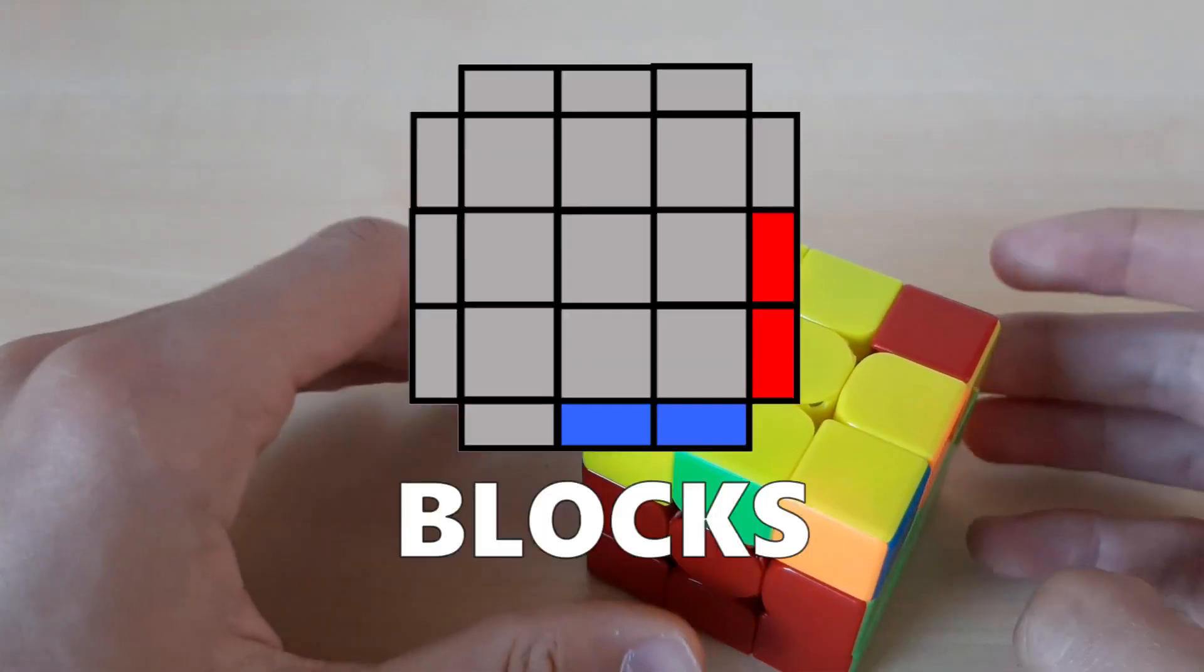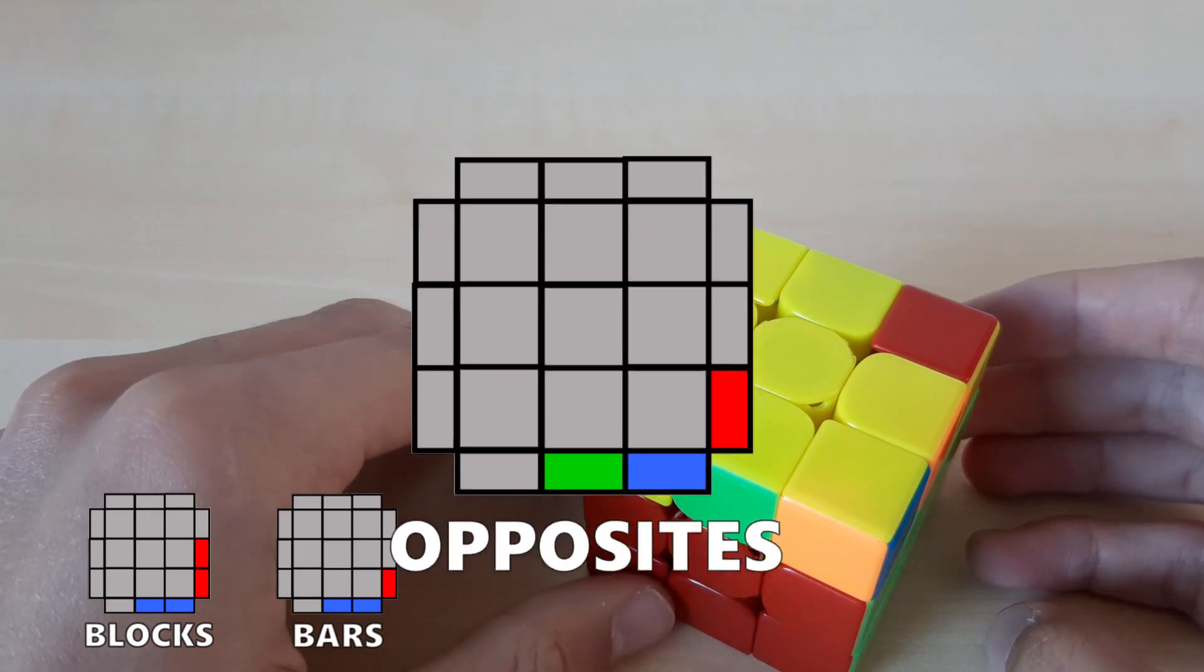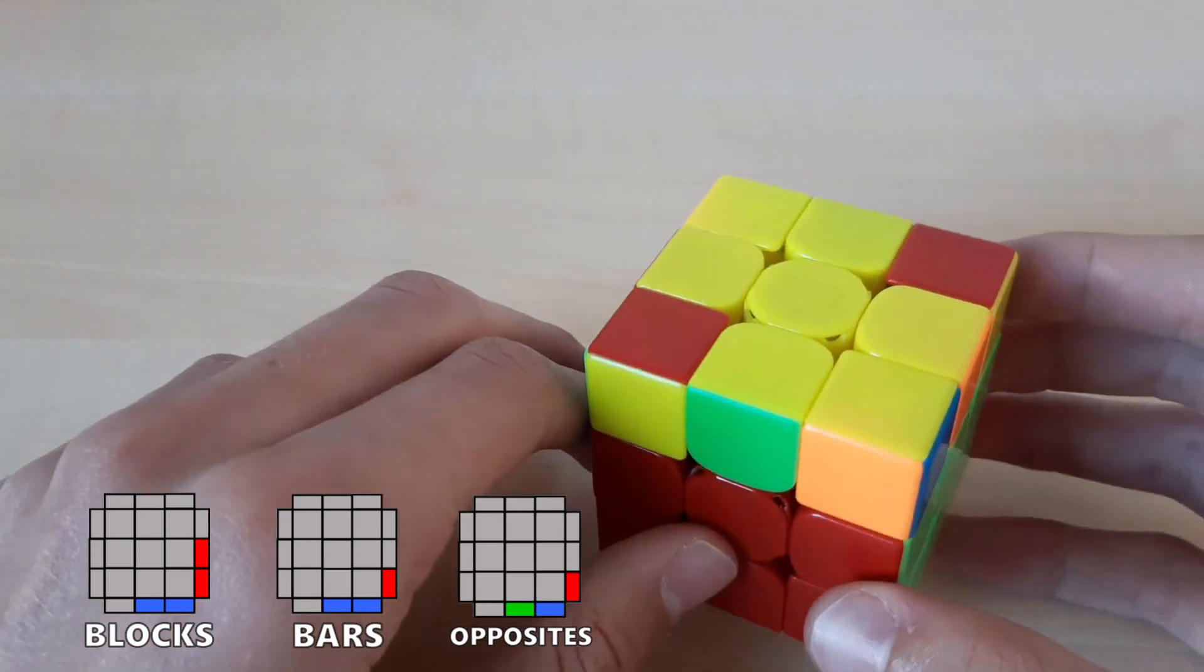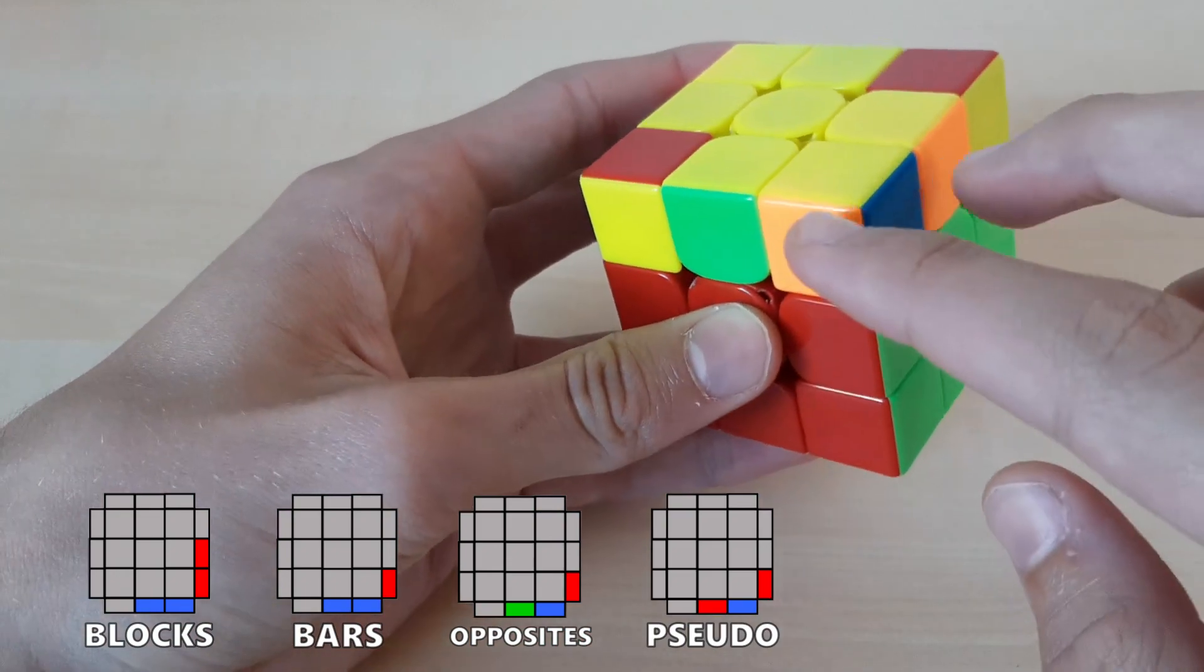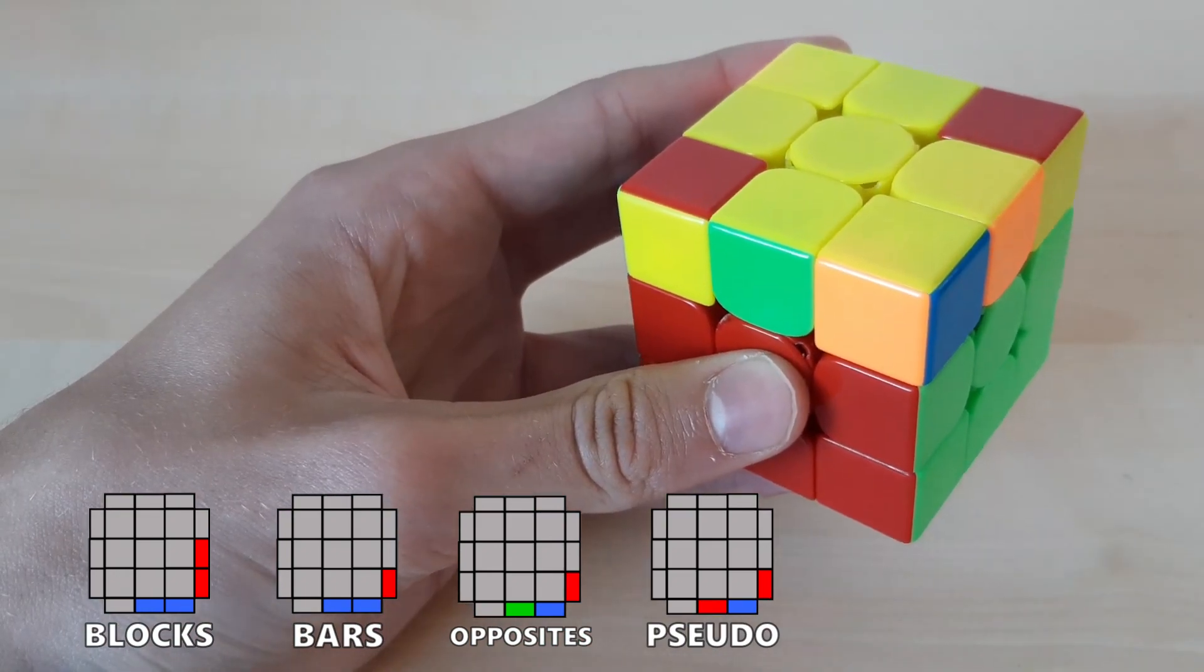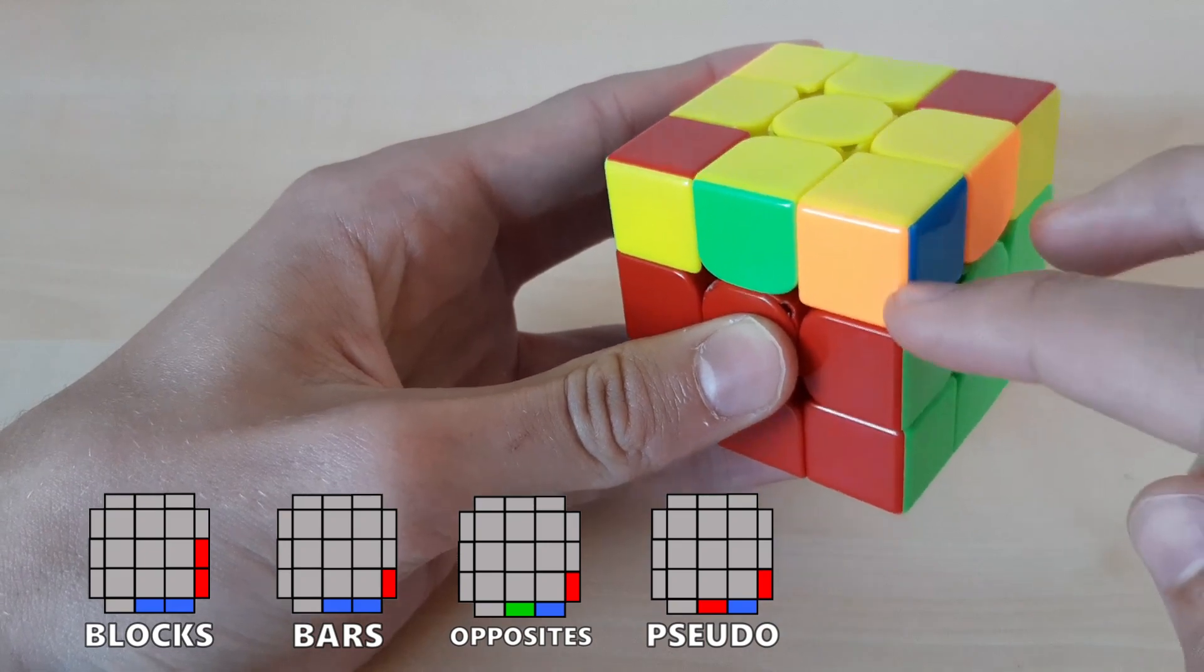General characteristics to look for are blocks, bars, opposite blocks or bars, and especially for the L cases, pseudobars. That's whenever you have those two matching. So it's essentially a bar, but the wrong sticker of the corner matches the edge, like that.